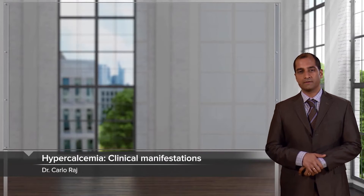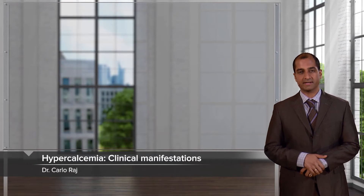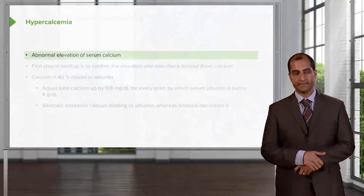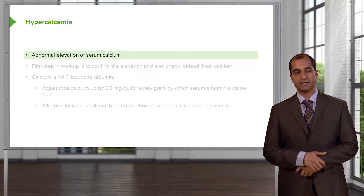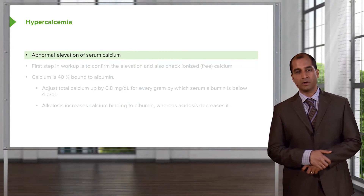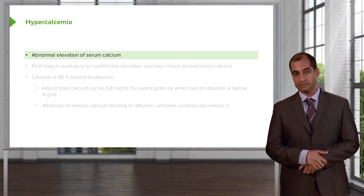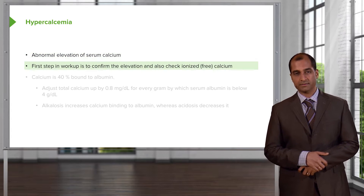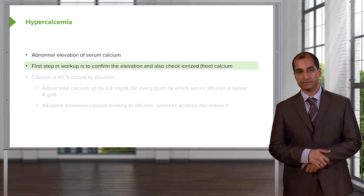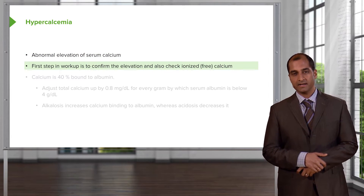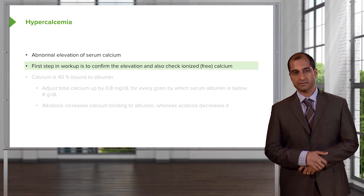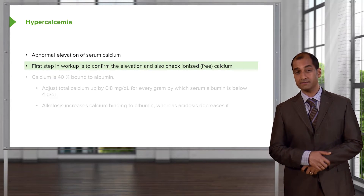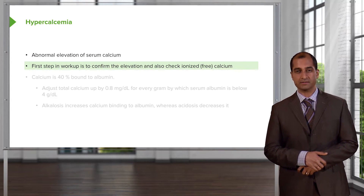Now that we've looked at the overview of calcium homeostasis, let's take a look at hypercalcemia and all the different pathologies associated with it. Hypercalcemia is an abnormal elevation of serum calcium. The first step in workup is to confirm the elevation and always check to see what your free ionized calcium is, because that would be the functioning form.